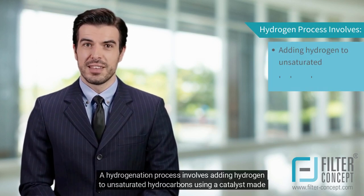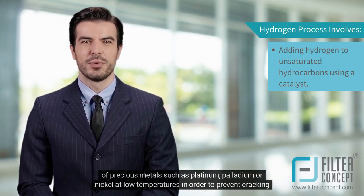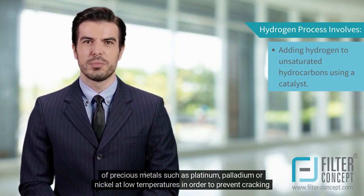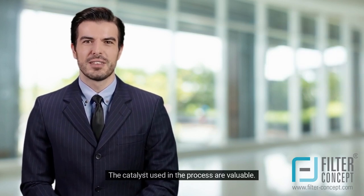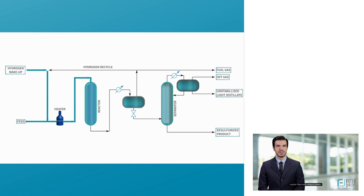A hydrogenation process involves adding hydrogen to unsaturated hydrocarbons using a catalyst made of precious metals such as platinum, palladium, or nickel at low temperatures in order to prevent cracking or other chemical changes from occurring. The catalysts used in the process are valuable. The feedstock — unsaturated hydrocarbons — are heated and passed with hydrogen gas through a reactor filled with catalyst pellets. The precise parameters depend on the nature of the feedstock, the particular process, and the degree of hydrogenation required.